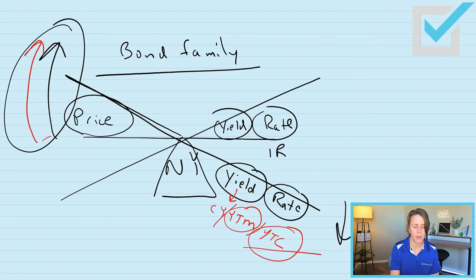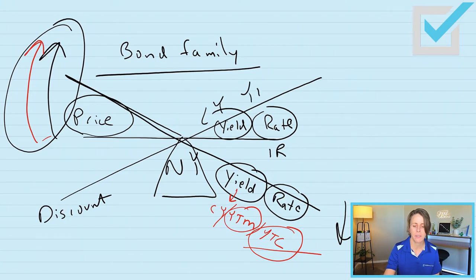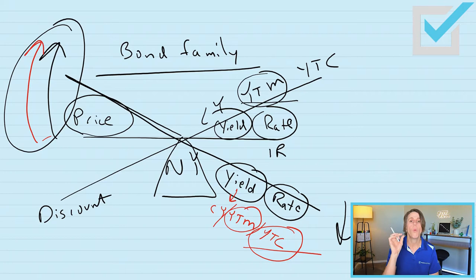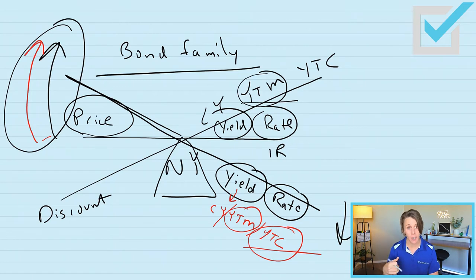Let's look at what happens if the bond is trading at a discount. We'd have current yield, yield to maturity, yield to call — because they never get up and move around, they always stay in the same order. So yield to maturity is going to be reflective of what you paid for the bond versus what it's worth at maturity. If interest rates have not gone down, it makes the most sense to consider the yield to maturity when purchasing a bond.